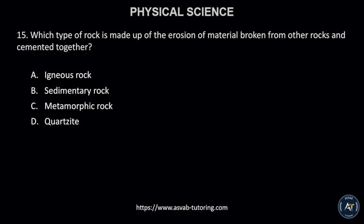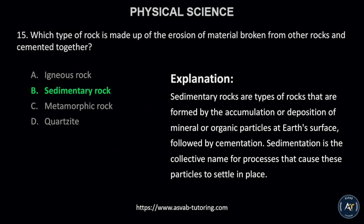Number 15. Which type of rock is made up of the erosion of material broken from other rocks and cemented together? A. Igneous rock, B. Sedimentary rock, C. Metamorphic rock, or D. Quartzite. The correct answer is B. Sedimentary rock.